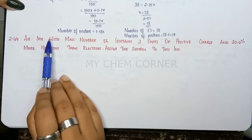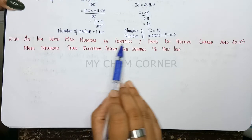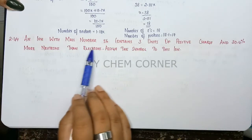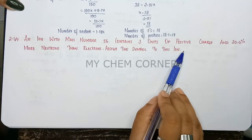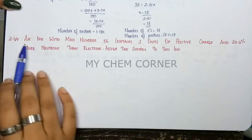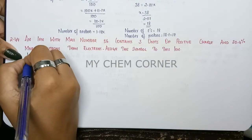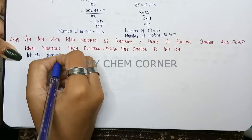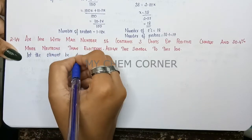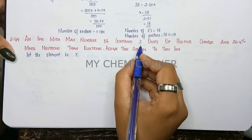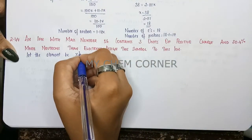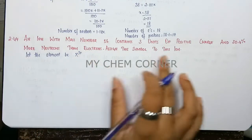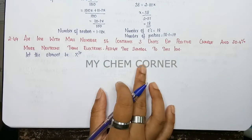Question 2.44: an ion with mass number 56 contains three units of positive charge and 30.4 percent more neutrons than electrons — assign the symbol to this ion. We don't know what our element is, so let the element be X. Since there are three units of positive charge, the element will have a 3+ charge. This is the element for which we are going to find the symbol.